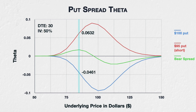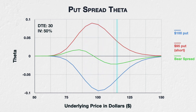Taking the underlying price of $85 as an example, the short 95 put has a theta of 0.0632 and the long 100 put has a theta of minus 0.0461. This means the spread has a total theta of 0.0171 — positive theta, meaning if the underlying price is sitting there, the spread will currently gain value as time passes. Moving further to the right to the area over $100, both options are now out of the money but also have some extrinsic value. Taking the underlying price of $115 as an example, the short 95 put has a theta of 0.0409 and the long 100 put has a theta of minus 0.0634, which means the spread has a total theta of minus 0.0225.